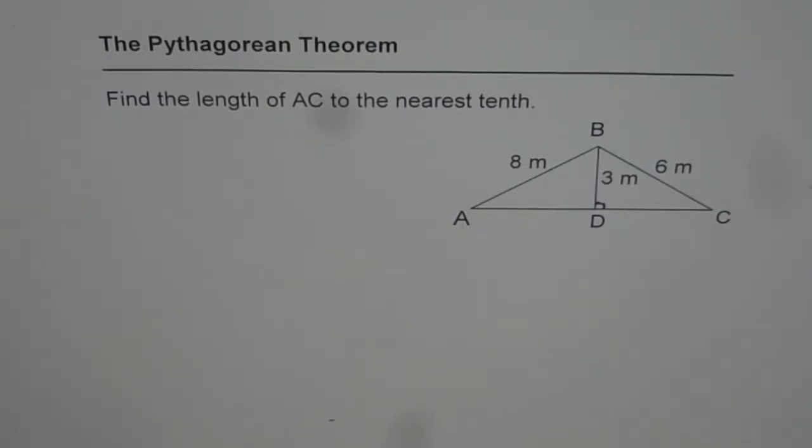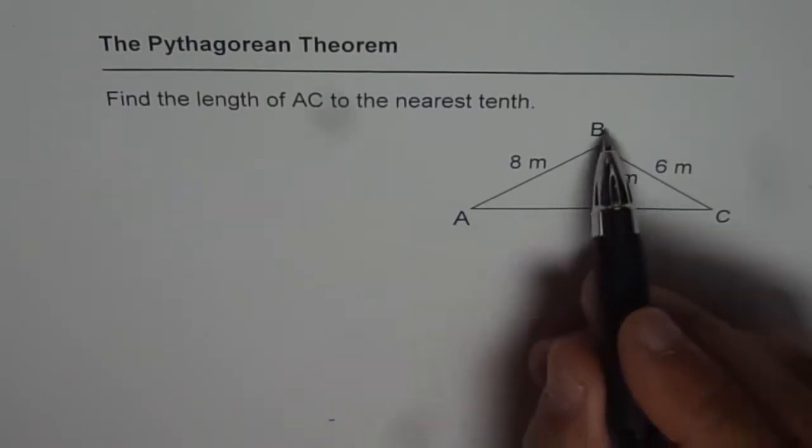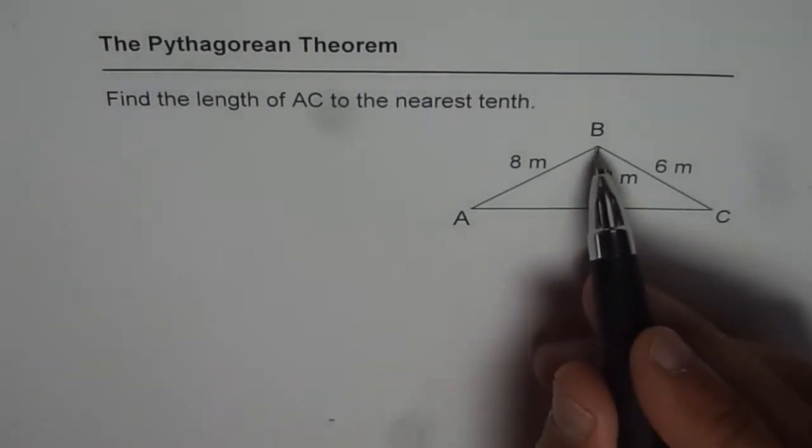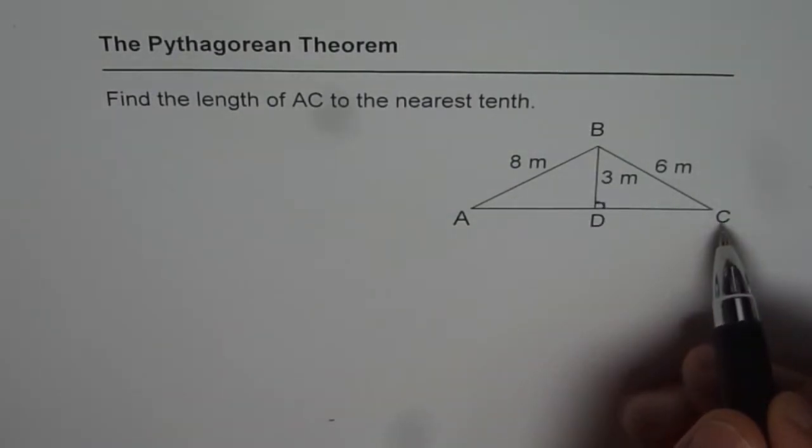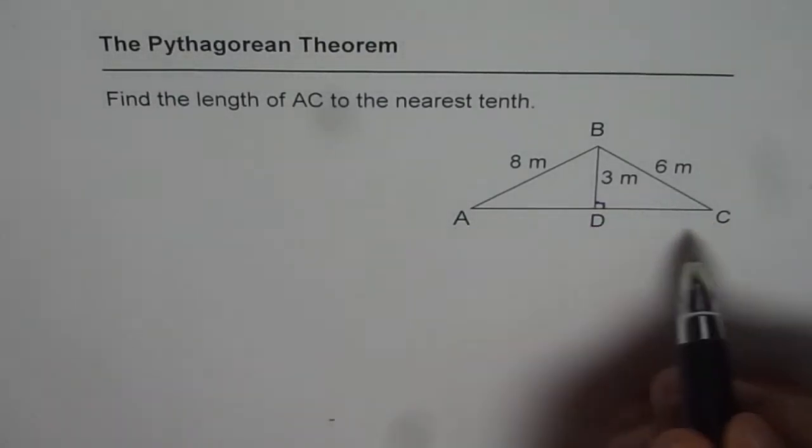Now to do this, we can solve two separate triangles: ABD where we know the hypotenuse and one of the legs, and the other one is BDC. Then by combining AD and DC, we will get the length of AC.